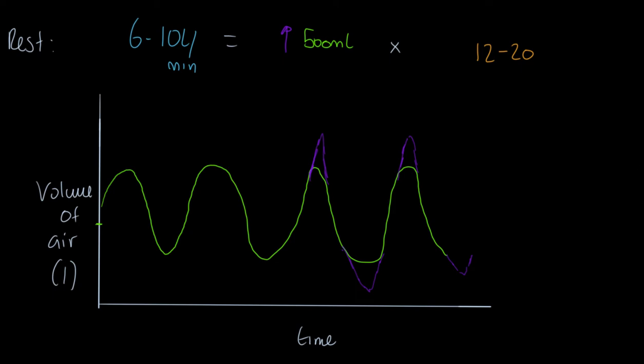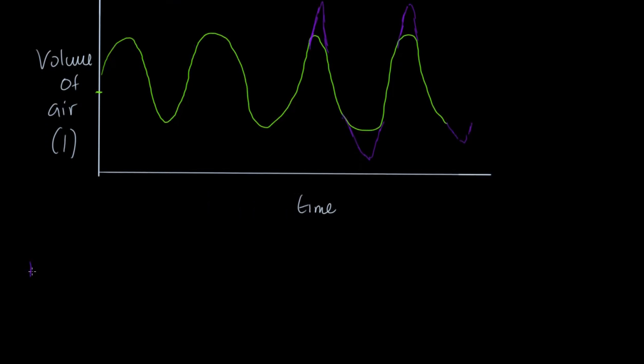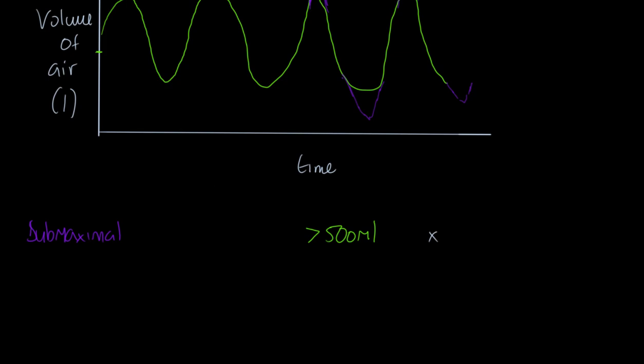If we were talking about submaximal exercise - going on a training run, doing something like a jog - what would we expect these values to be? Well, tidal volume is now greater than 500 milliliters, multiplied by some number. The person might have greater than 20 breaths per minute at submaximal exercise, depending on how intense it was. That means minute ventilation is now going to equal up to 20 liters per minute. Before we were doing six to ten liters, we're now doing 20 liters per minute.